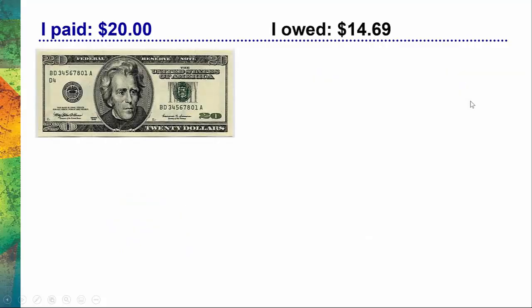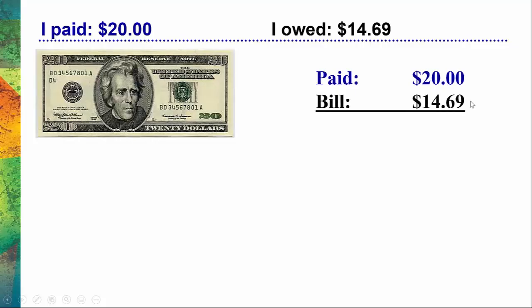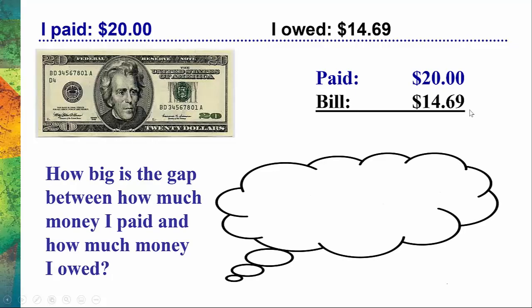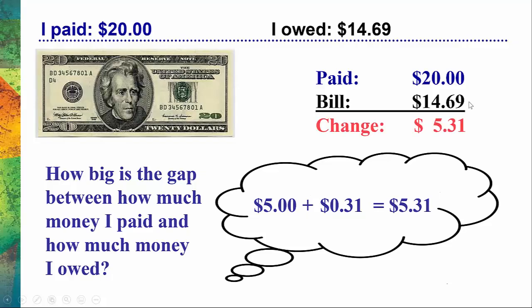Let's do one last example. Let's say I paid $20, but the bill was just $14.69. Because it's kind of difficult to work with $14.69, I'm just going to round it right up to $15. I can easily see the difference between $15 and $20 is $5. Now I just need to ask, how big is the difference between $14.69 and $15? The difference is simply $0.31. So I'm remembering $5, I'm thinking about $0.31, I add those together and the correct change I'm owed is $5.31. You can verify that with a calculator.